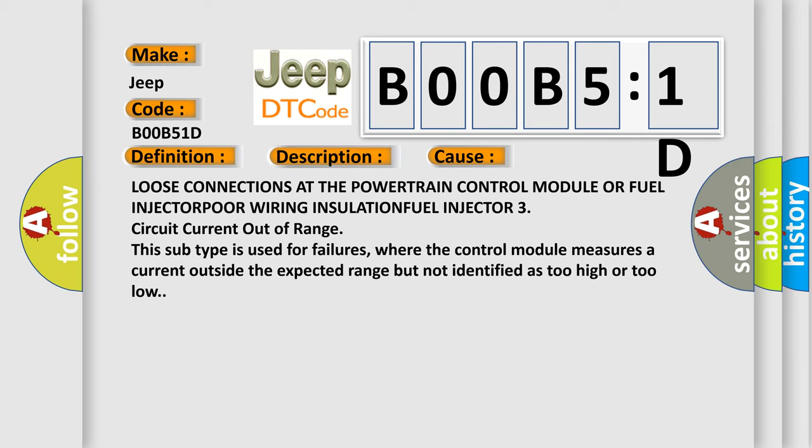Circuit current out of range. This subtype is used for failures where the control module measures a current outside the expected range but not identified as too high or too low.